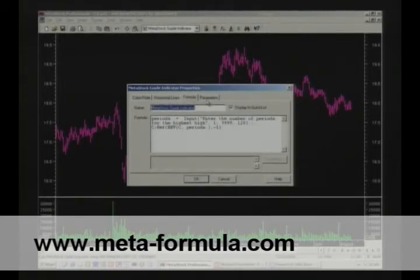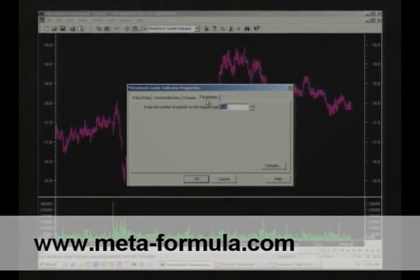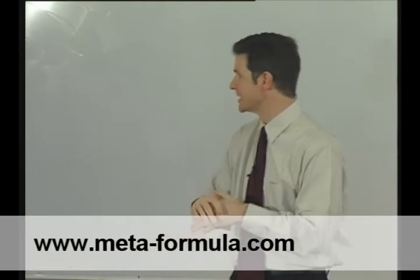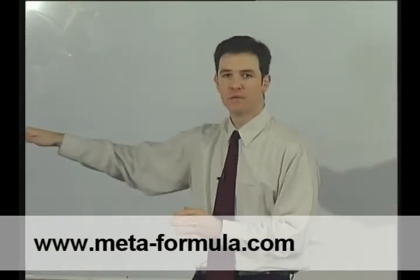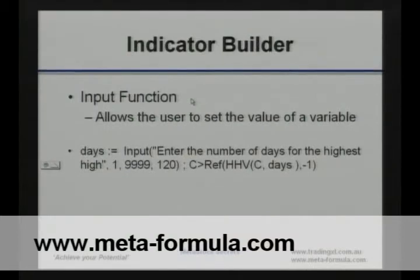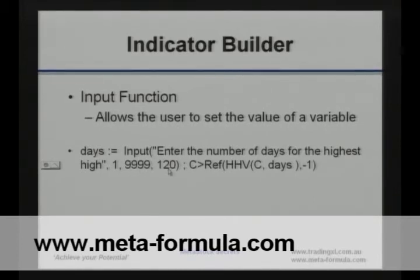When we go back to the parameters, before this indicator will be applied, we need to provide an answer to that particular variable. Going back to the PowerPoint presentation — in the bottom left-hand corner, the beginning of the second line, notice there are a few numbers: 1, 9,999, and 120. The 1 is the minimum value that Metastock will accept for that variable. The 9,999 is the maximum value it will accept. The 120 is the default value sitting there when you first use it. If we provide a response outside that range, Metastock will simply say no — it needs to be between 1 and 9,999.